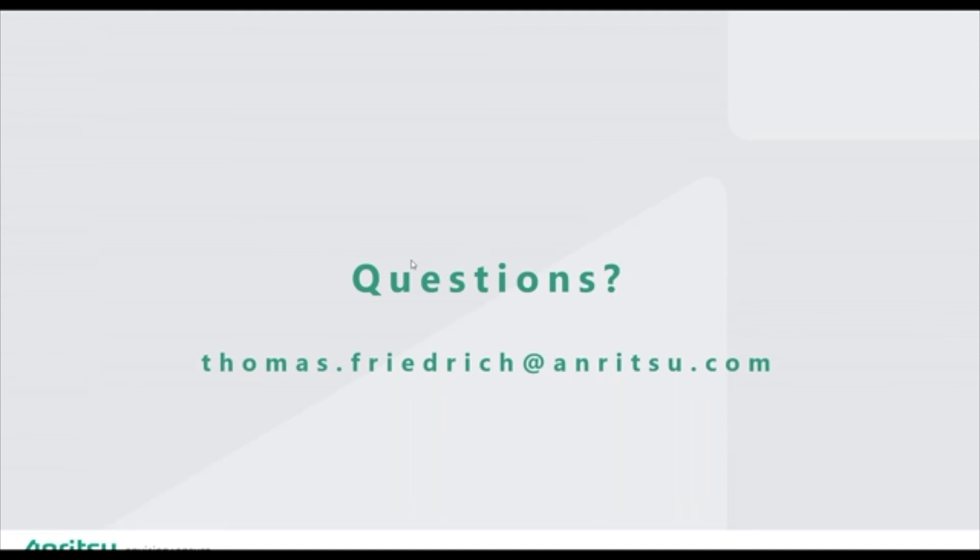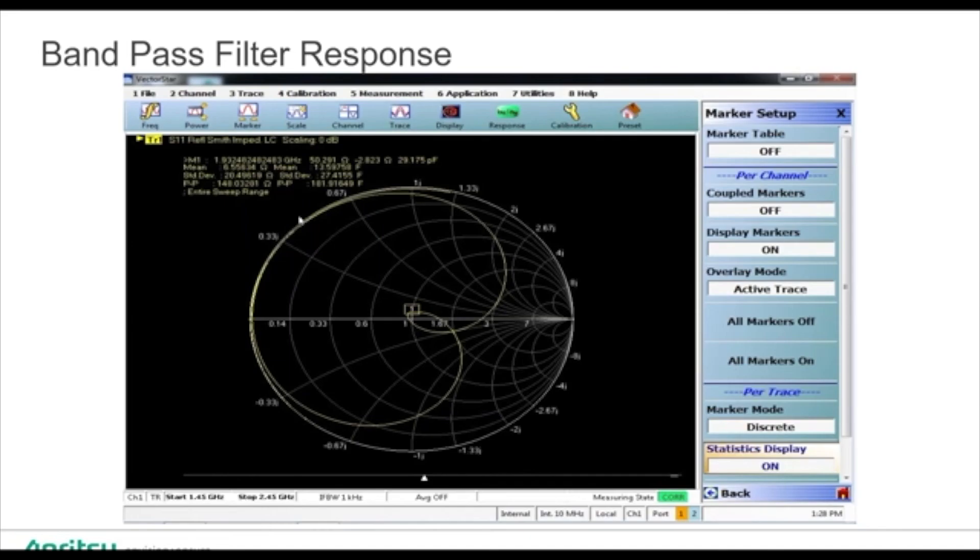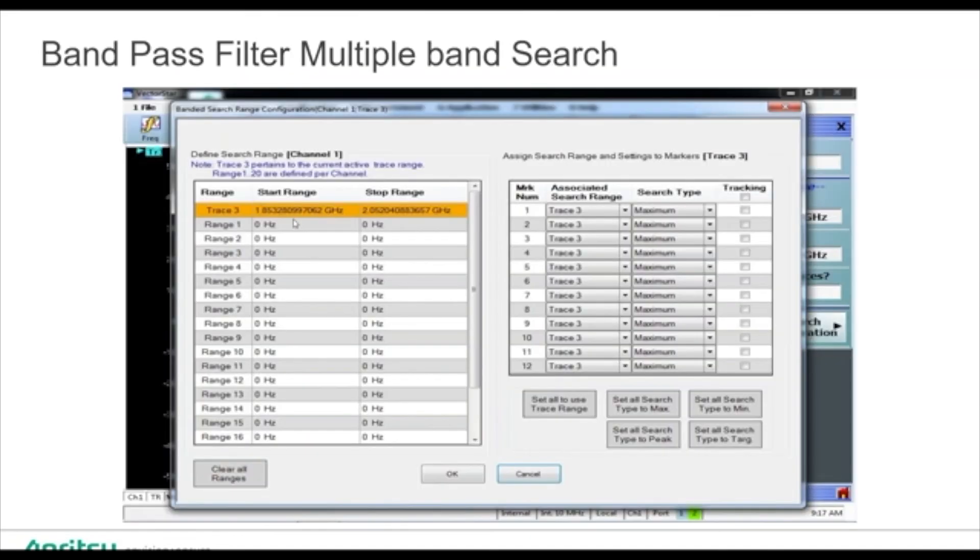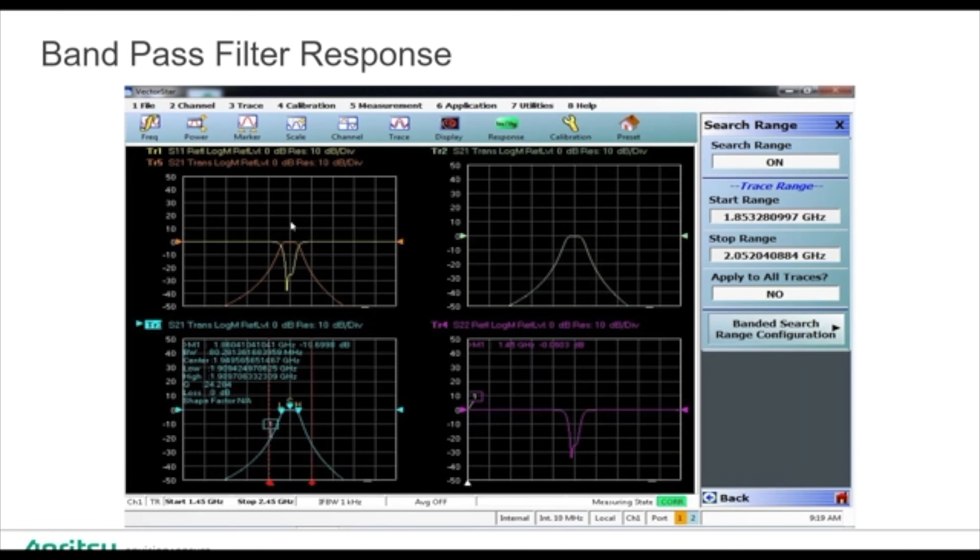Next question: Why does the trace 1 S11 response look not uniform like the S21? Let me back up here to our display. What you'll see is that this is S11, so that's the forward reflection, and we'll see the shape right here. If we look at it in the same, you'll notice that it's the exact same shape.